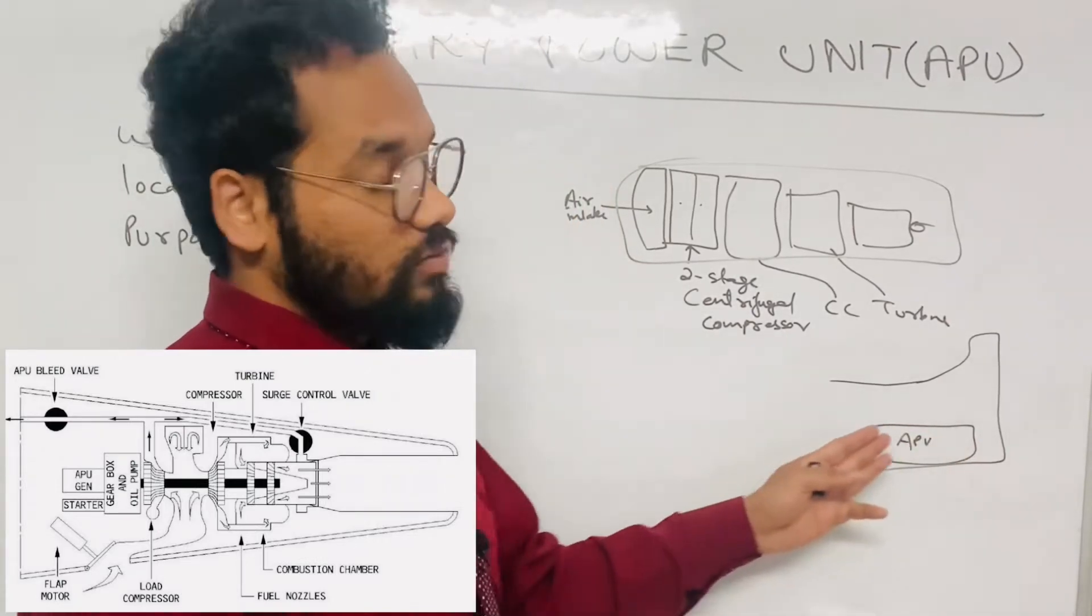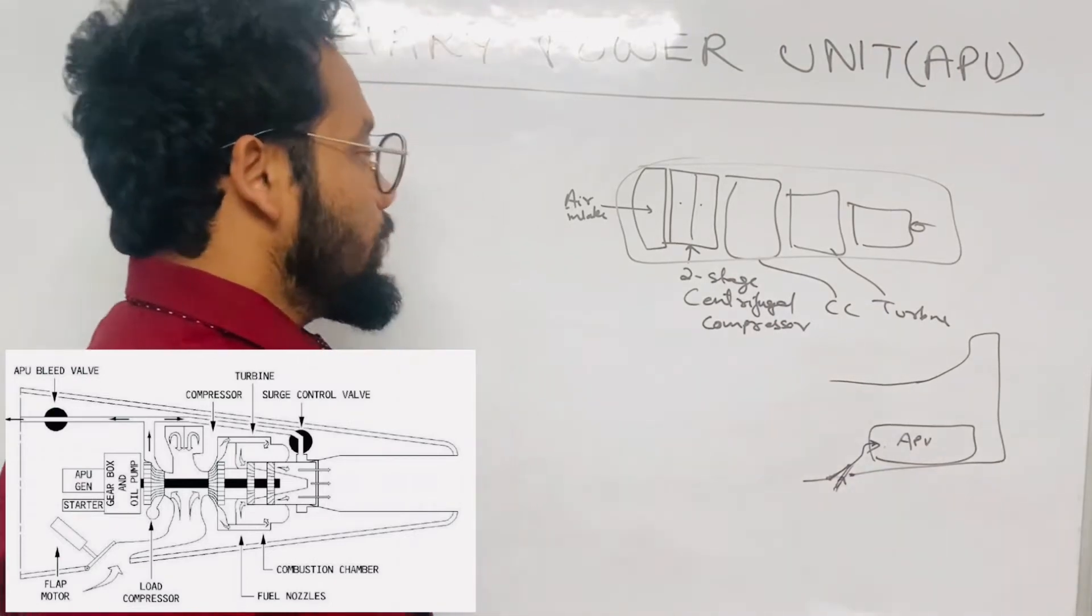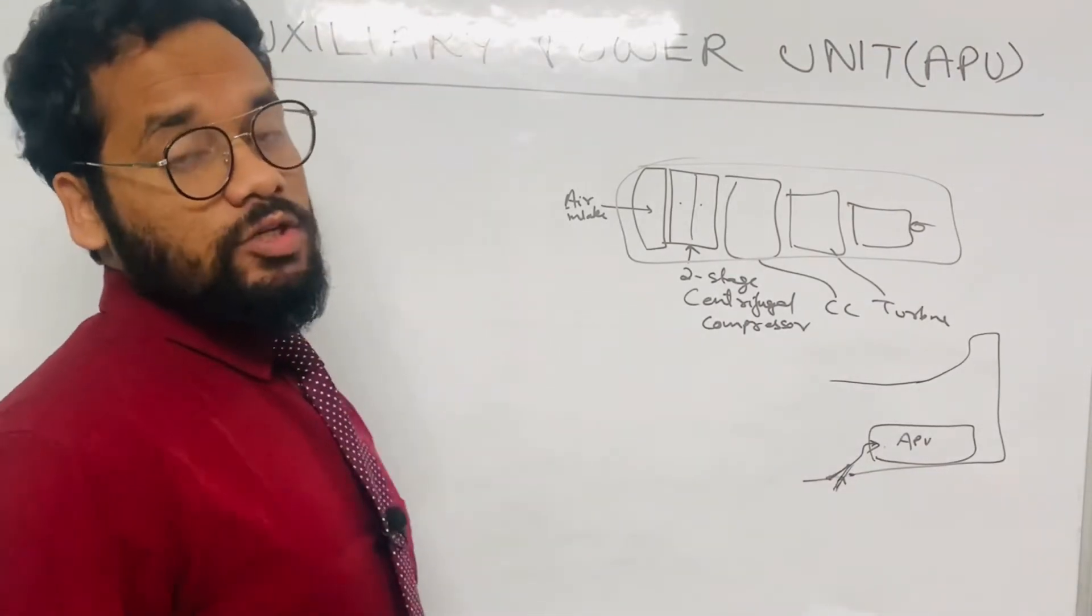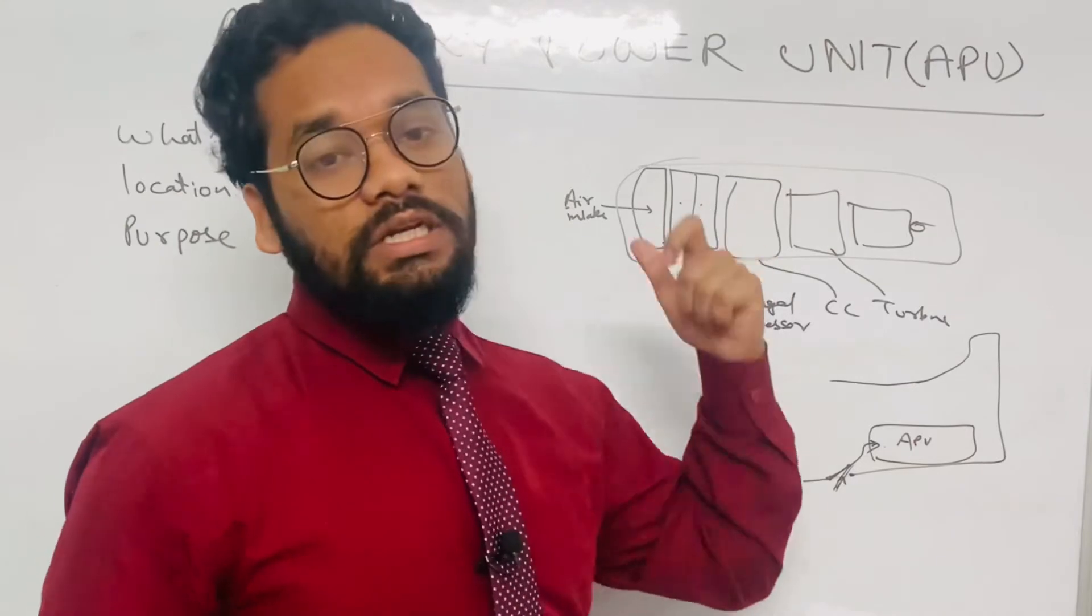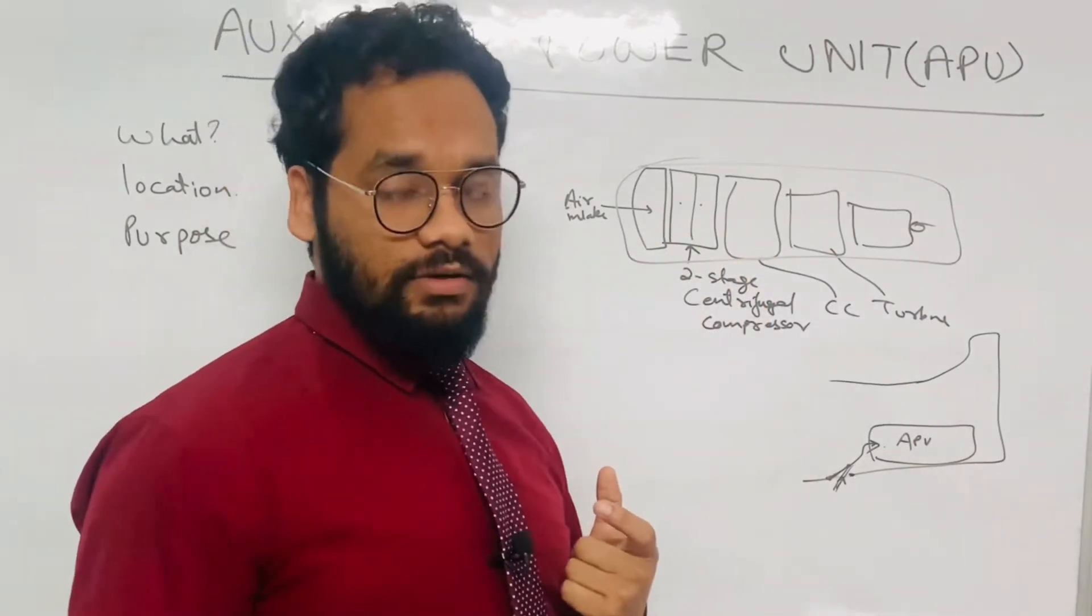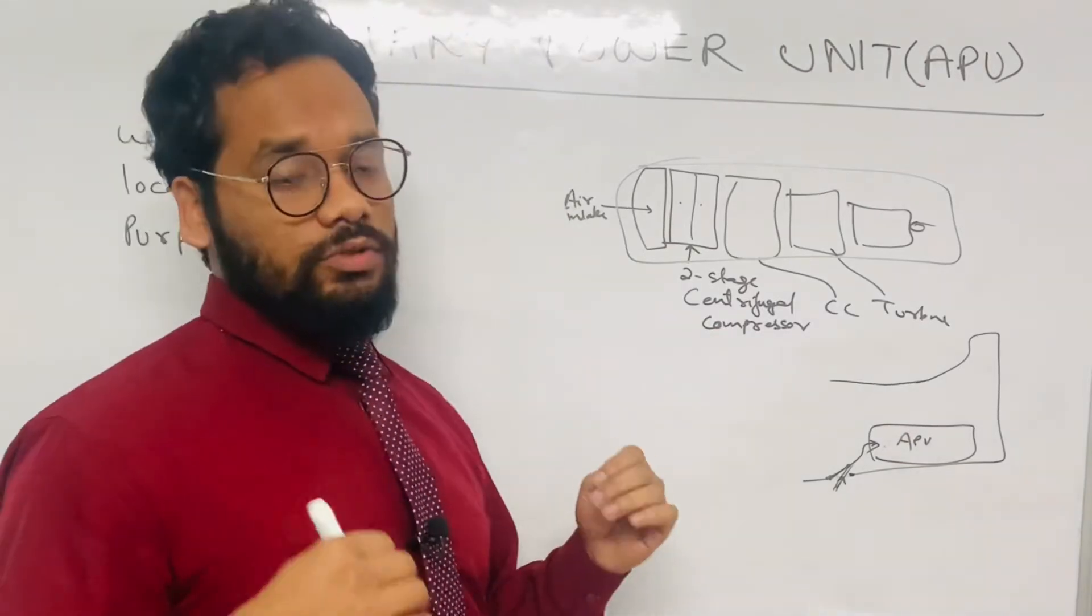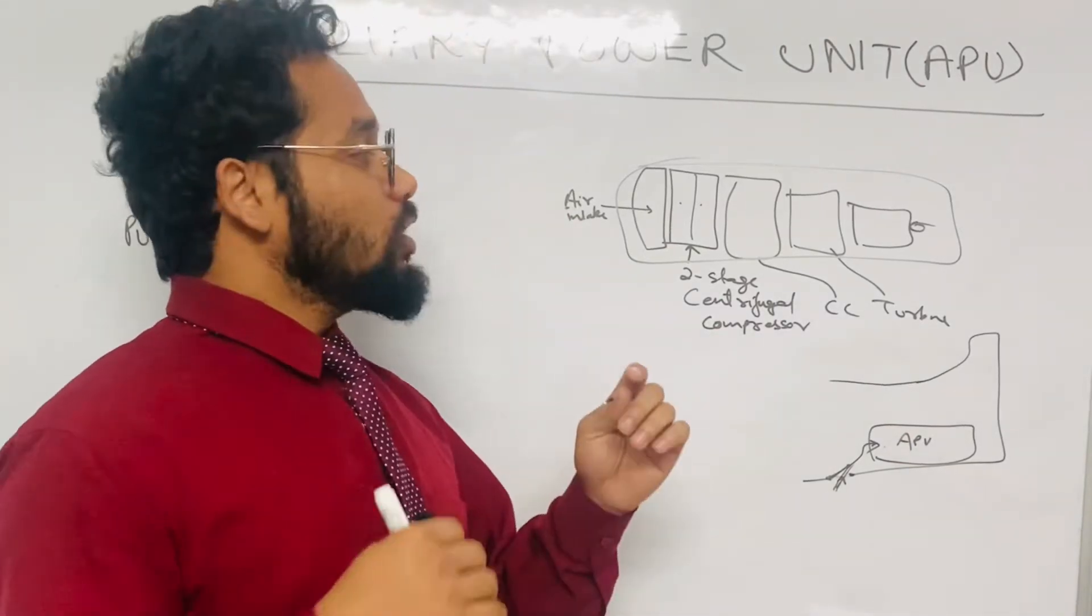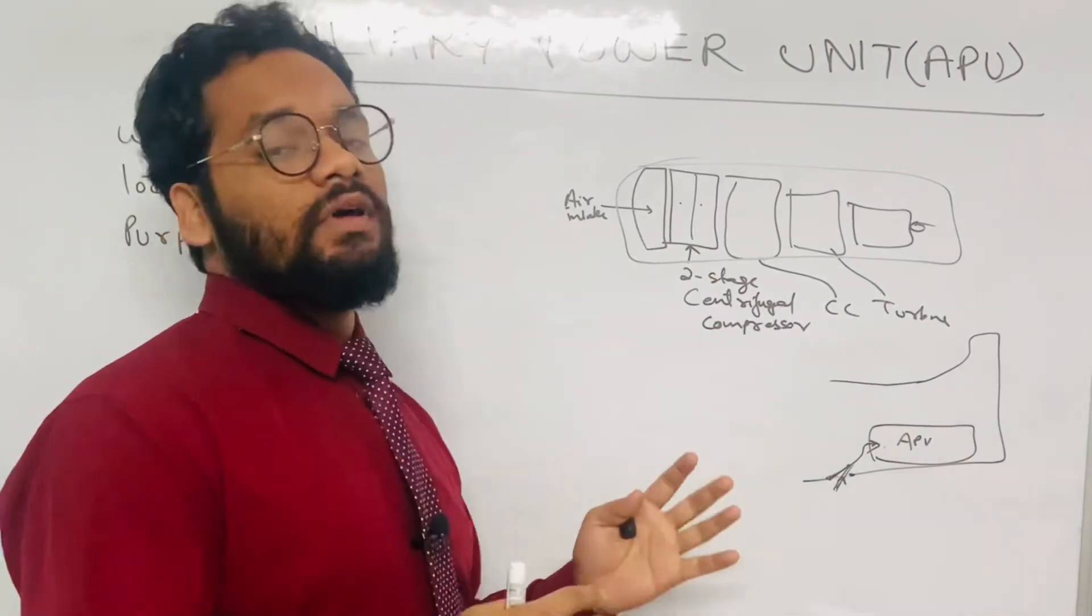And then this is how the APU gets the air for its operation. Now to start the APU, friends, you should know that APU needs electrical power, and that electrical power comes from the batteries, aircraft main batteries. So you should always keep in mind that if you want to start the APU you need to have one source of power supply and on ground obviously it can be the battery power.